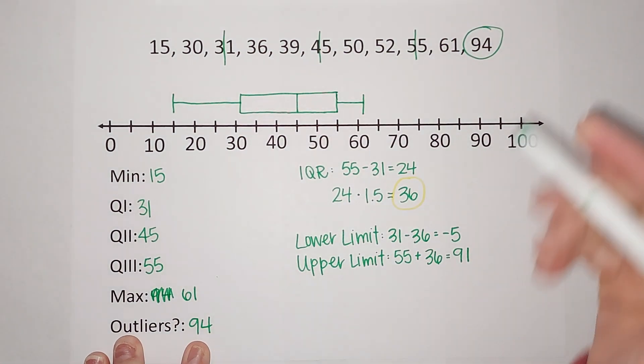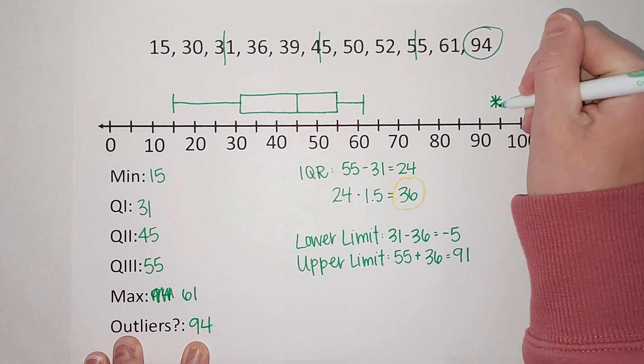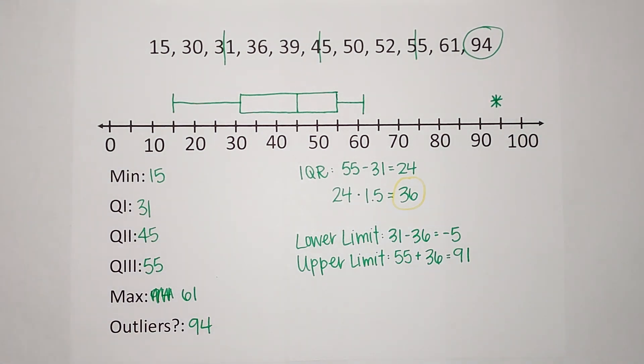And then I'm going to put a little asterisk at about 94. There we go, there is your modified box plot.